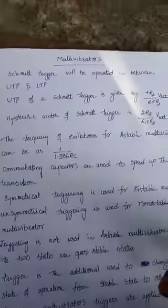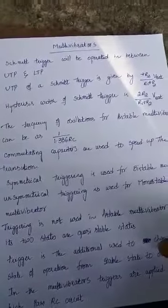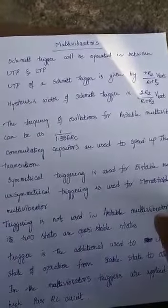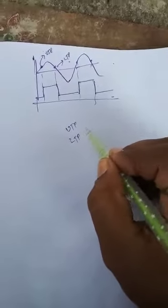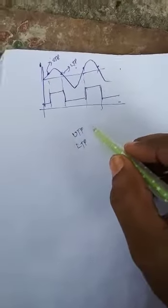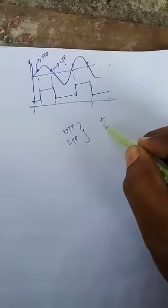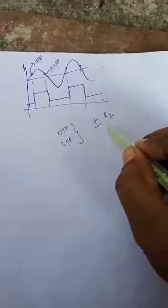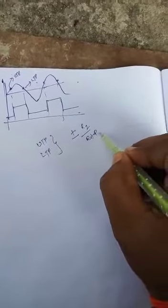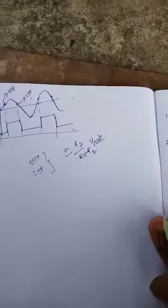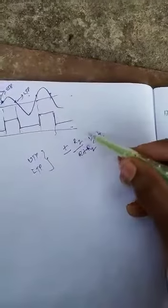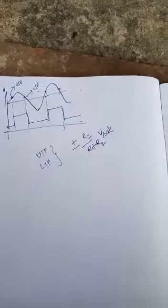In the next question, the UTP of the Schmitt trigger is given by plus R2 by R1 plus R2 into V_sat. UTP and LTP are the two values used for Schmitt trigger operation, and these two values are given by plus or minus R2 by R1 plus R2 into V_sat. The UTP value is positive R2 by R1 plus R2 into V_sat, and the LTP value is negative R2 by R1 plus R2 into V_sat.